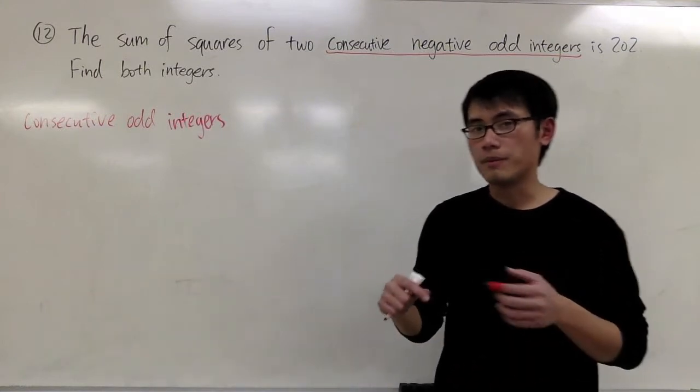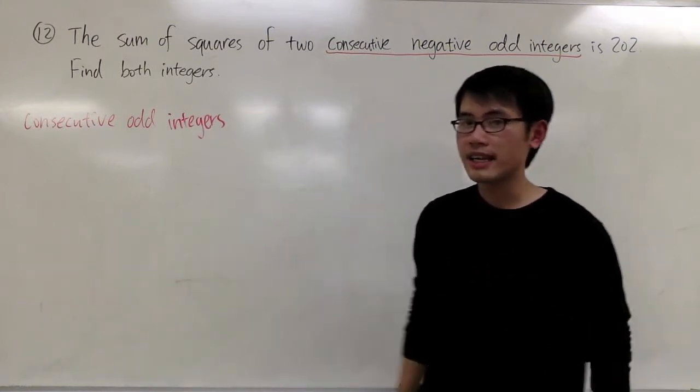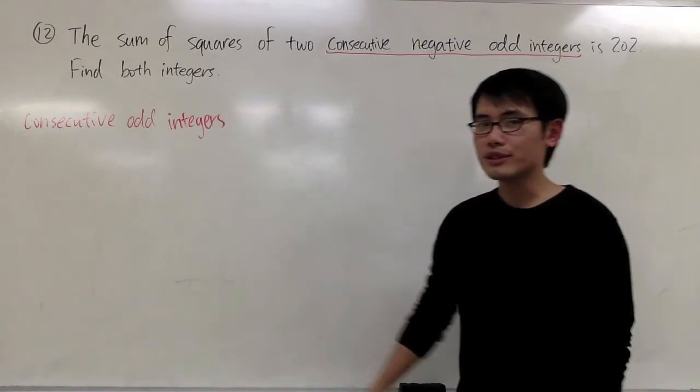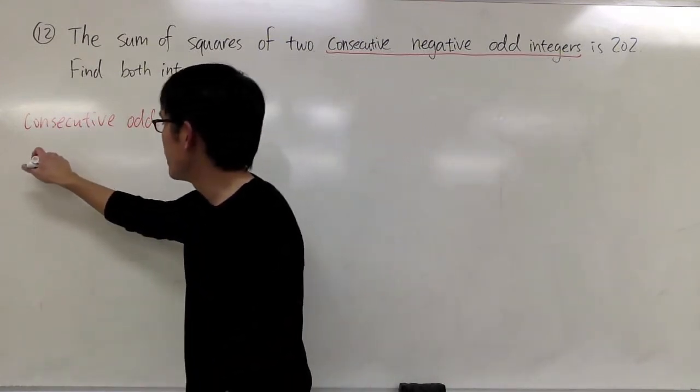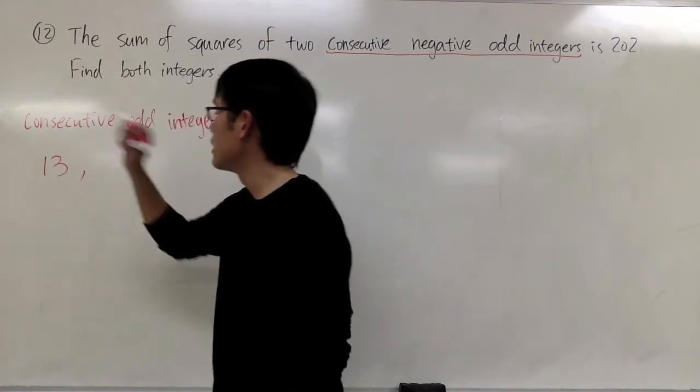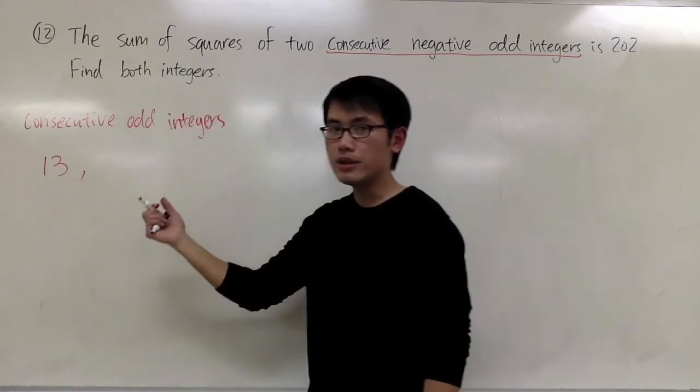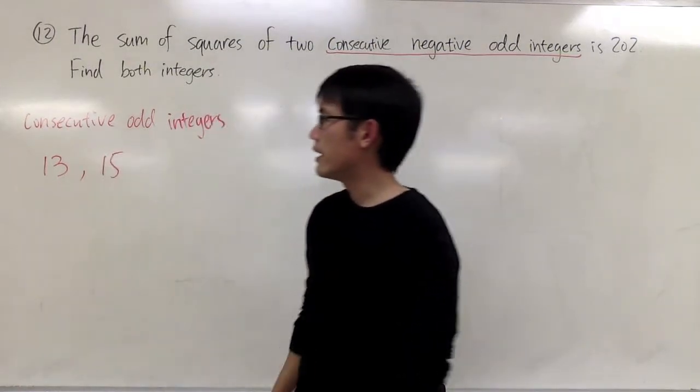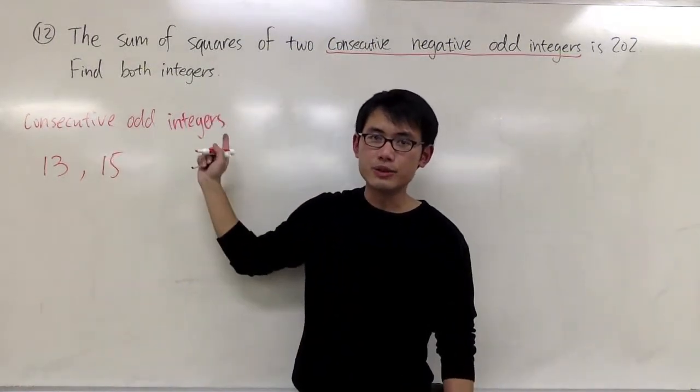I can have 25, 27, things like that, or 209. Those are odd numbers. And if I start with, let me say 13, so that's an odd number, and the next odd number will be 15. And that's what I mean by consecutive odd integers.